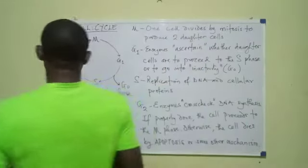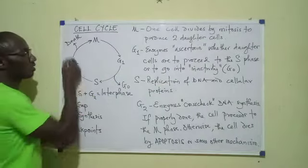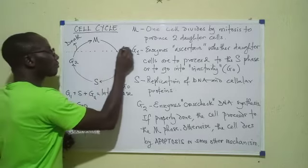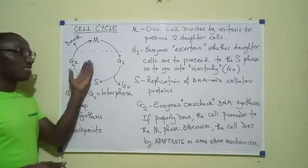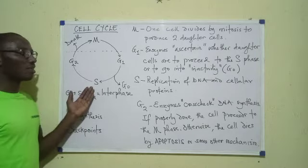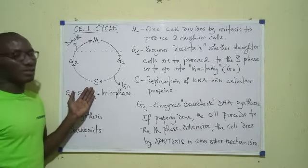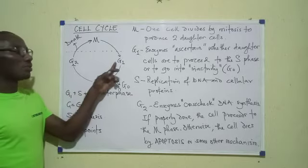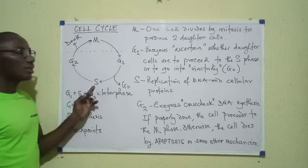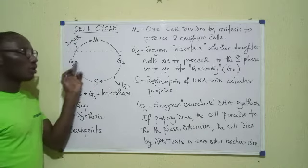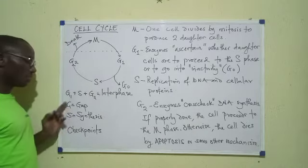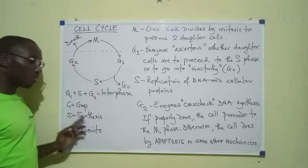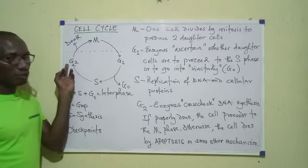Coming to this diagram, let's see these two phases. If I were to put a line here, everything under the line would be interphase. Interphase itself has three sub-phases: G1, S, and G2. G stands for gap — so G1 is gap 1, S stands for synthesis, and G2 is gap 2. Those three make up interphase.